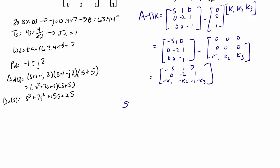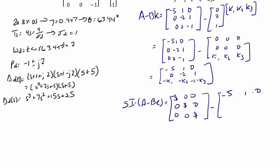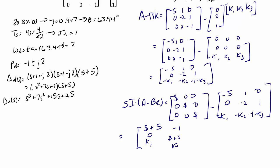Next we find SI minus (A minus BK), which equals [[S+5, 0, k1], [-1, S+2, k2], [0, -1, S+1+k3]].